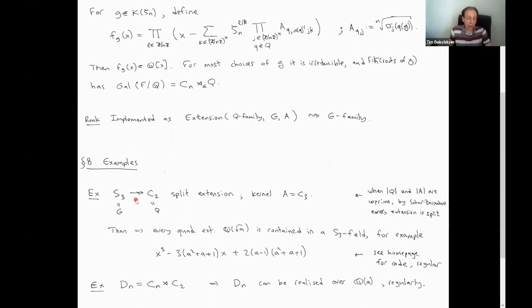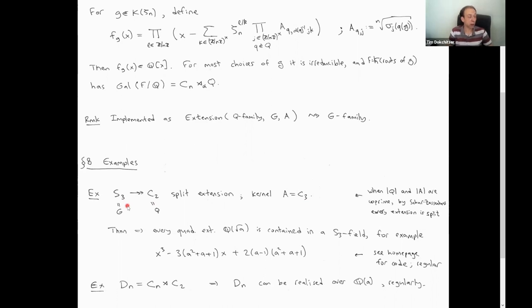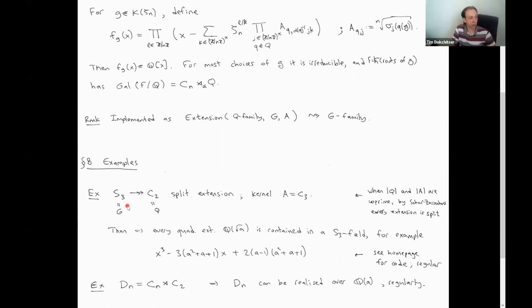So S3 is a special case of what we now did, because it's a split extension with a cyclic kernel. Therefore, by Saltman's theorem, the embedding problem is always soluble. Every C2 extension can be embedded in an S3 extension. That's a neat result — not completely obvious — that every quadratic extension is contained in some S3 extension. In other words, for every integer D, you can always cook up a cubic polynomial which has discriminant D up to squares, so that the corresponding splitting field contains Q(√D).